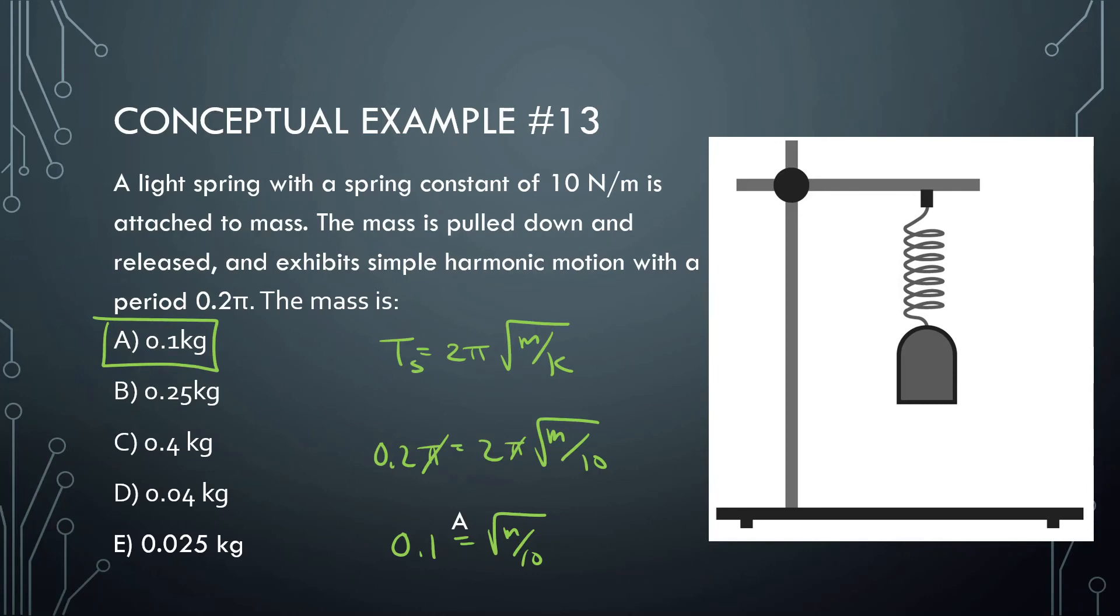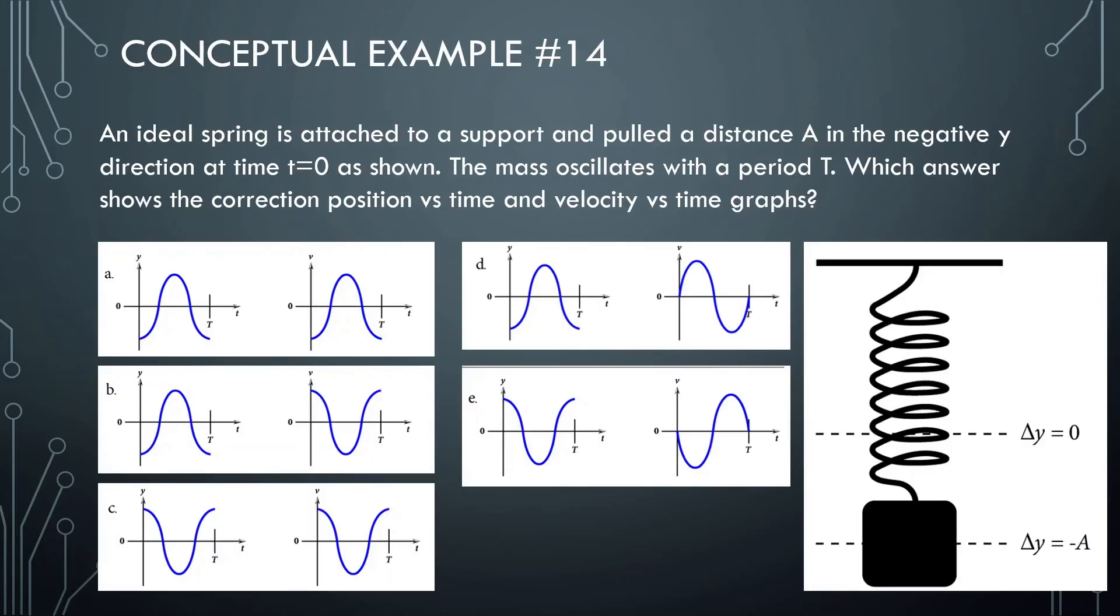Okay, moving on. Last one here. An ideal spring is attached to a support and pulled a distance a in the negative y direction at time t equals 0, as shown. Okay, the mass oscillates with the period t, which shows the correlation, position versus time and the velocity versus time graph. Okay, so we know at time t equals 0, it starts here, and then it's going to oscillate back and forth and back and forth and back and forth.